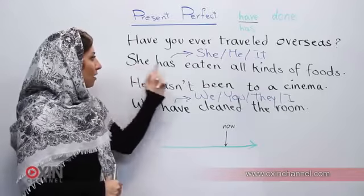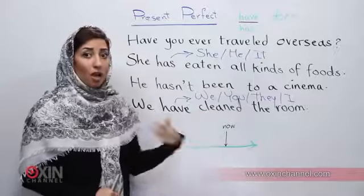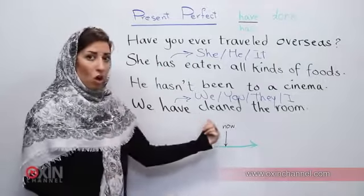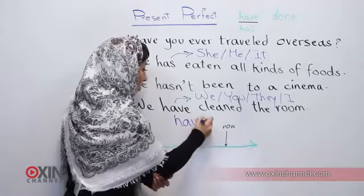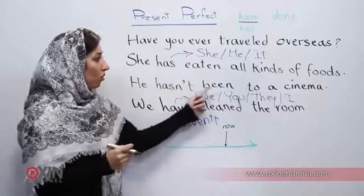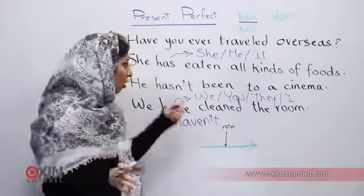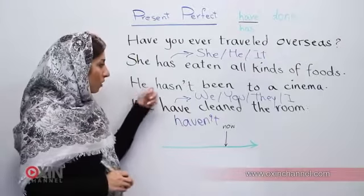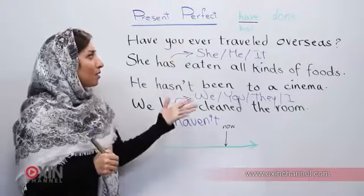So the affirmative form is: she has eaten, we have cleaned. For the negative, we make have or has negative: have not or haven't, and has not or hasn't. The past participle verb doesn't change at all — all changes happen on the auxiliary verb.